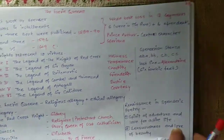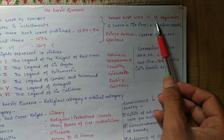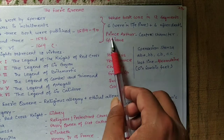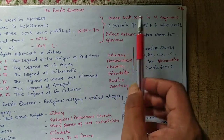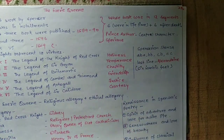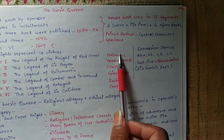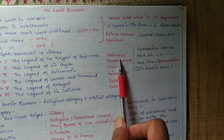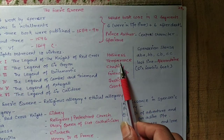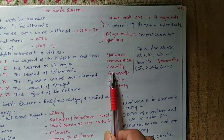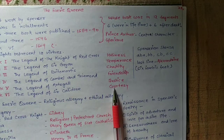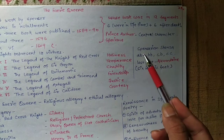The whole book was in 12 segments — six published in Spenser's lifetime and six published after his death. The two central characters are Prince Arthur and Gloriana. In the first book the virtue represented is Holiness; in the second book Temperance; in the third book Chastity; the fourth book Friendship; the fifth book Justice; and the sixth book shows Courtesy. It has the Spenserian stanza.